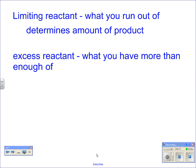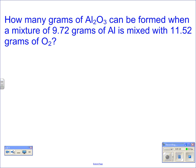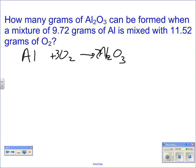As an example problem: how many grams of aluminum oxide can be formed when aluminum is mixed with oxygen? Our steps are the same as regular stoichiometry. First we need a balanced equation: aluminum plus oxygen makes aluminum oxide. To balance that, I put a 4 here, a 3 here, and a 2 here. That's our typical first step.